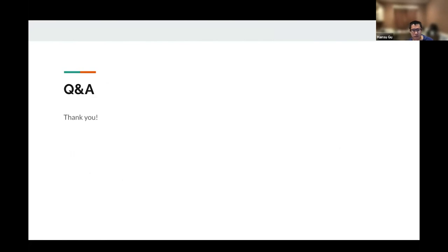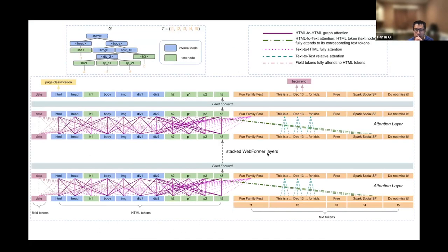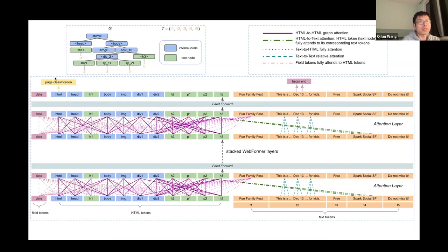Thanks, Chifan. Anyone have a quick question? Yes — for the classification task, you're trying to predict a span with a start and end. Are those just a simple softmax or anything special? Good question. For the classification task it's straightforward — you can build a binary or multi-class classifier. For the span extraction, we tried different methods like BIO sequential tagging which can handle multiple occurrences, but for simplicity in this work we just use softmax to get one begin index and one end index.